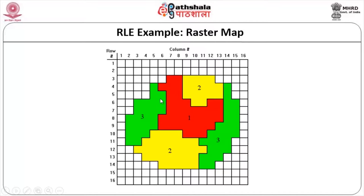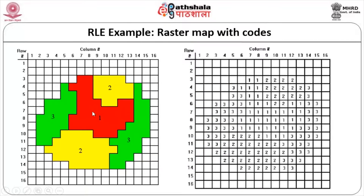How do you compress the data? How do you represent this particular data using RLE? As you can see here, this is the table which is being generated. The entire first row has no values. Second row, no values. Third row up to the sixth — the red one is indicative of object or theme one: one followed by four twos. Then the fourth row, fifth row, and so on and so forth.